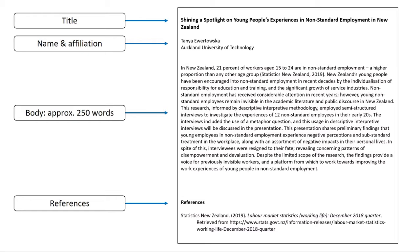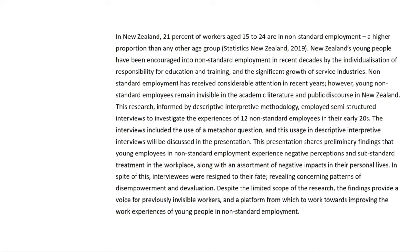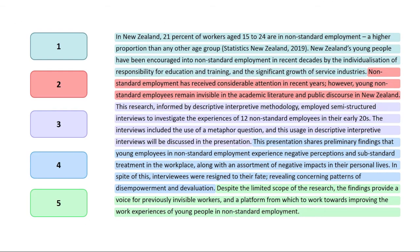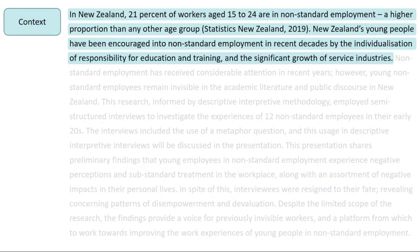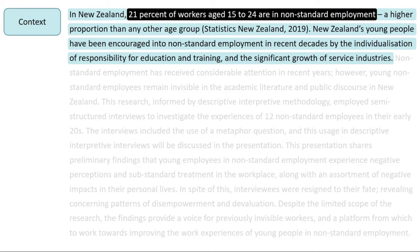The body of a conference abstract typically has five parts. This social sciences abstract describes a research presentation about young people's experiences in non-standard employment in New Zealand. The first part of an abstract is the context, which explains the background to the research, including the research problem. Here, the context is that a large proportion of young workers are in non-standard employment.